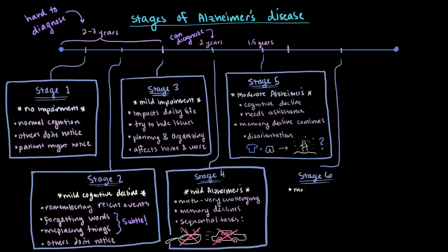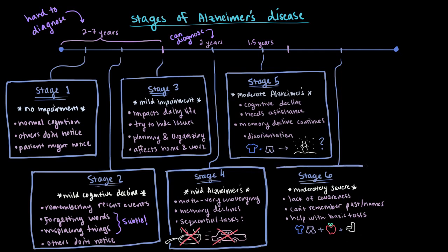Stage 6 is considered moderately severe Alzheimer's disease, and in this stage there's a significant lack of awareness of present events and this inability to remember the past and carry on a conversation. They'll likely need help with basic daily tasks, like getting dressed, eating, and going to the bathroom. The patient will likely be unable to recall names of family members, but will likely know that they're familiar. This stage lasts about 2.5 years.